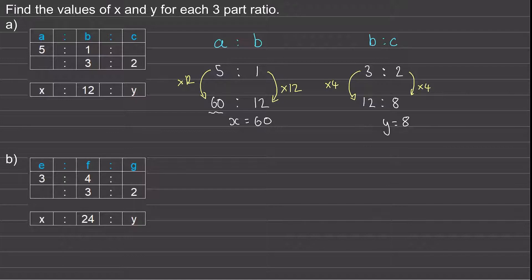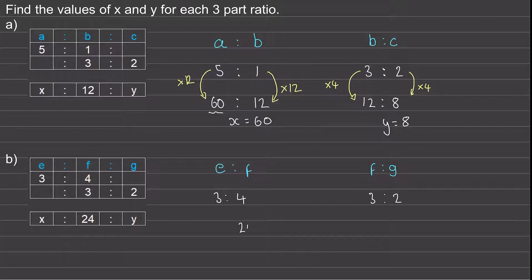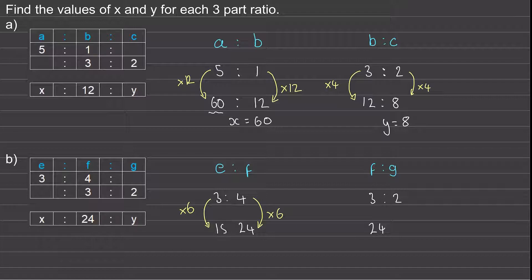Welcome back if you had a go. Our two two-part ratios are e to f and f to g. For e to f we've been given three to four, and for f to g we've been given three to two. In both ratios f is 24, so we can write this under the three and under the four. To work out e, we're going to multiply the four by six to make 24 and do the same to the e side. So when f is 24, e will equal 18.